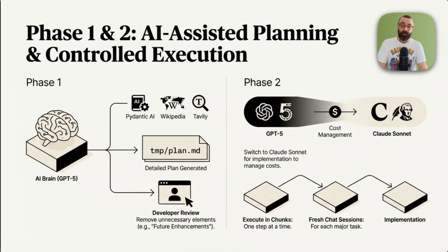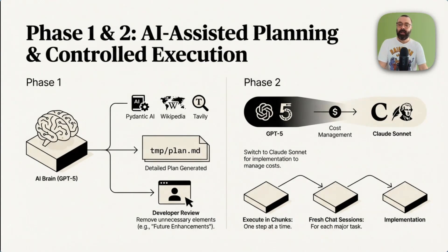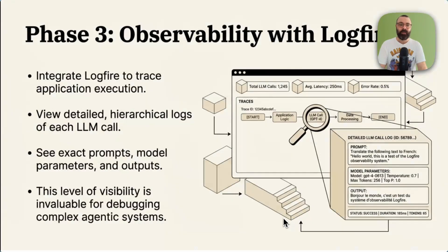GPT-4.5 tends to be overly verbose and suggests things that you didn't ask for. When we went to execution, Claude is prone to taking actions you didn't specify. So when you know the model well, you can adapt how you control it. What we did was execute in chunks, one step at a time, with fresh chat sessions for each major task. We had the living documentation so the new chat session could know exactly what was up, not relying on its own compaction.